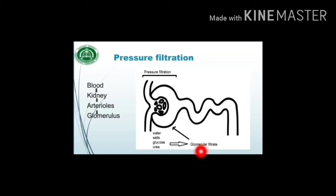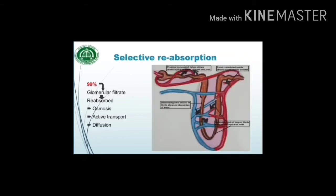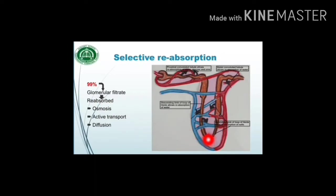This cup-shaped structure is the Bowman's capsule, and the material in it is now called the glomerular filtrate. In selective reabsorption, 99% of the glomerular filtrate is reabsorbed into the blood capillaries surrounding the renal tubule, as shown in the diagram.